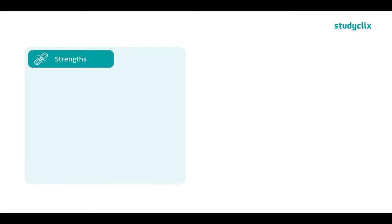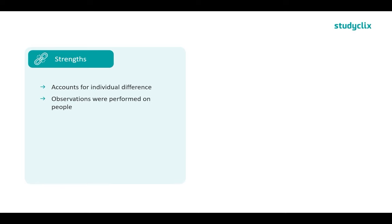Now we'll go through the strengths and weaknesses of this model. A key strength is that it accounts for individual differences — it tells us why some people find things stressful and others don't, depending on the individual's ability to cope and the resources they have. Another strength is that this model was built off observations performed on people, not on animals like the GAS model was. The individual also plays an active rather than passive role, and it accounts for cognitive processing, which many other models leave out.